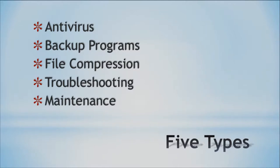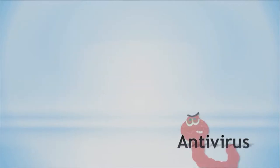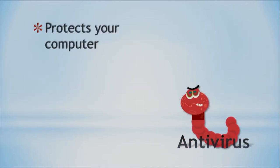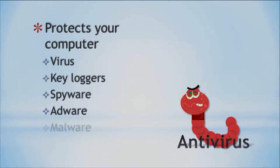So when we're looking at them, I will describe why we should be using them. So let's look at the first one, which is antivirus. Your antivirus, as you would expect, does protect your computer from different viruses, keyloggers, spyware, adware, and malware — items that we don't really want to have running on our system. Our antivirus software can help protect us and make sure that we don't have a virus that can do harm.